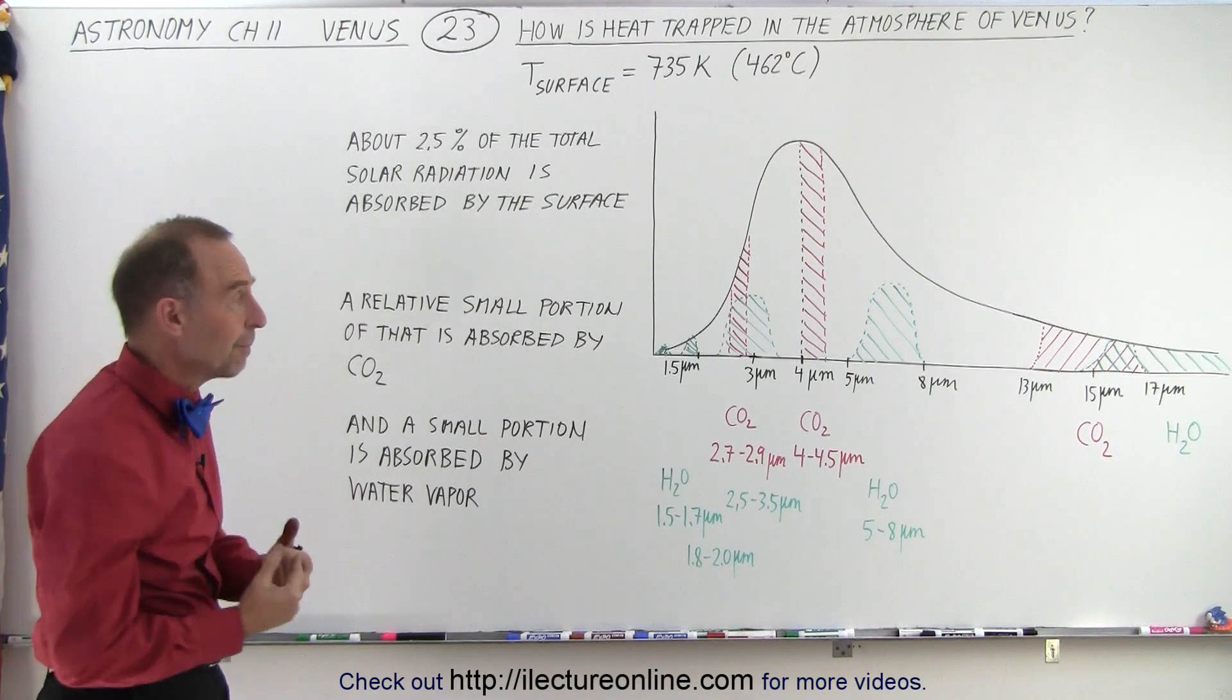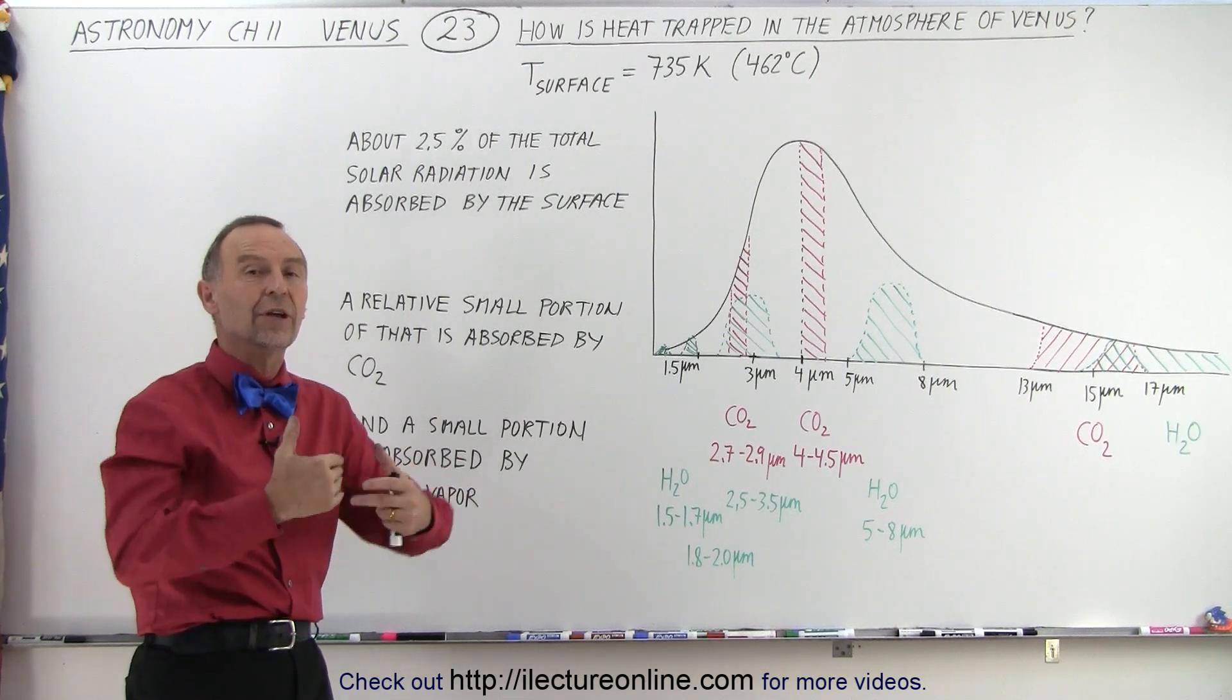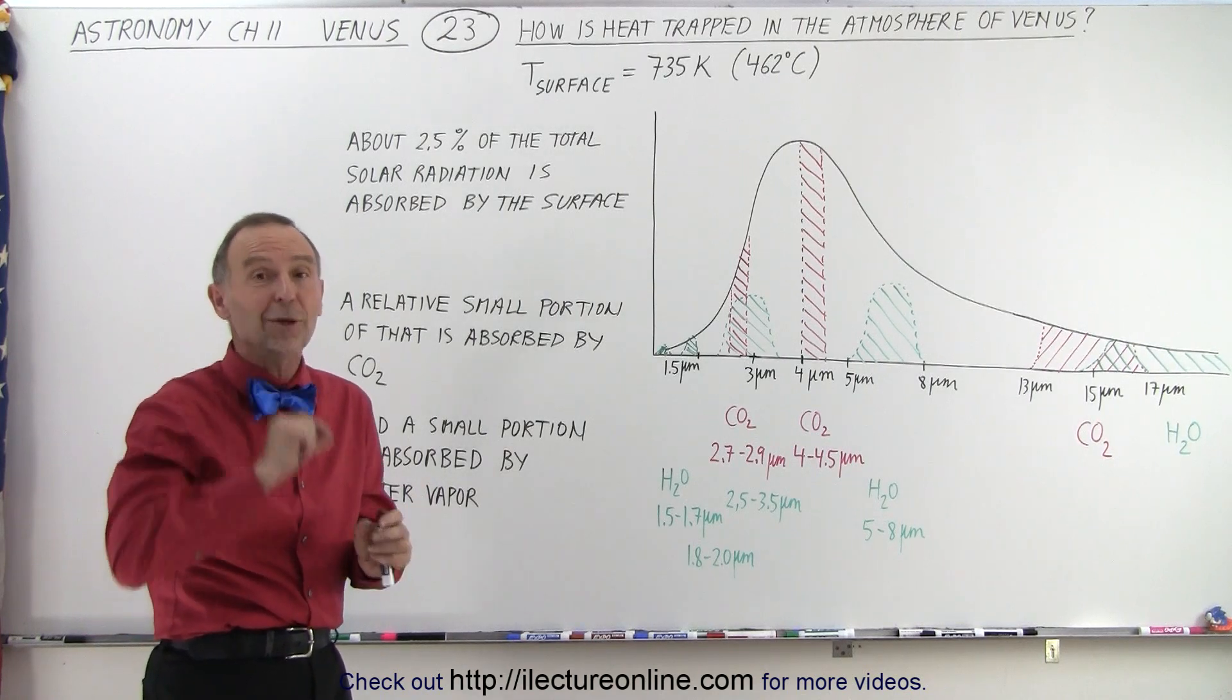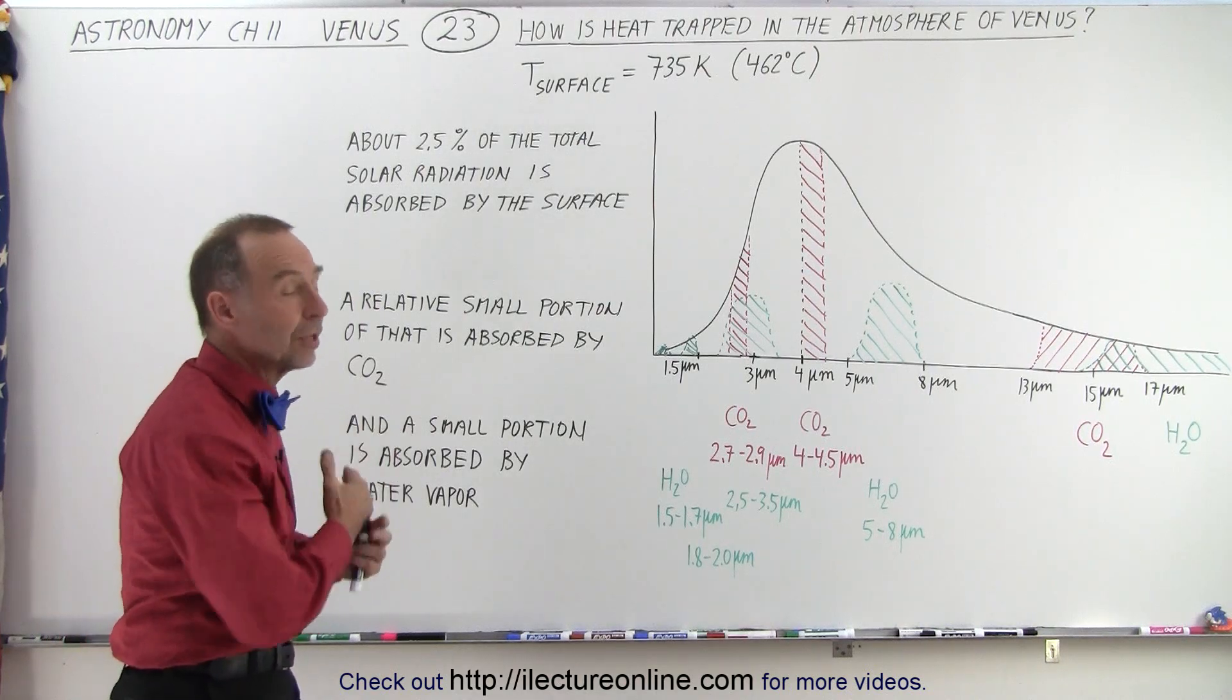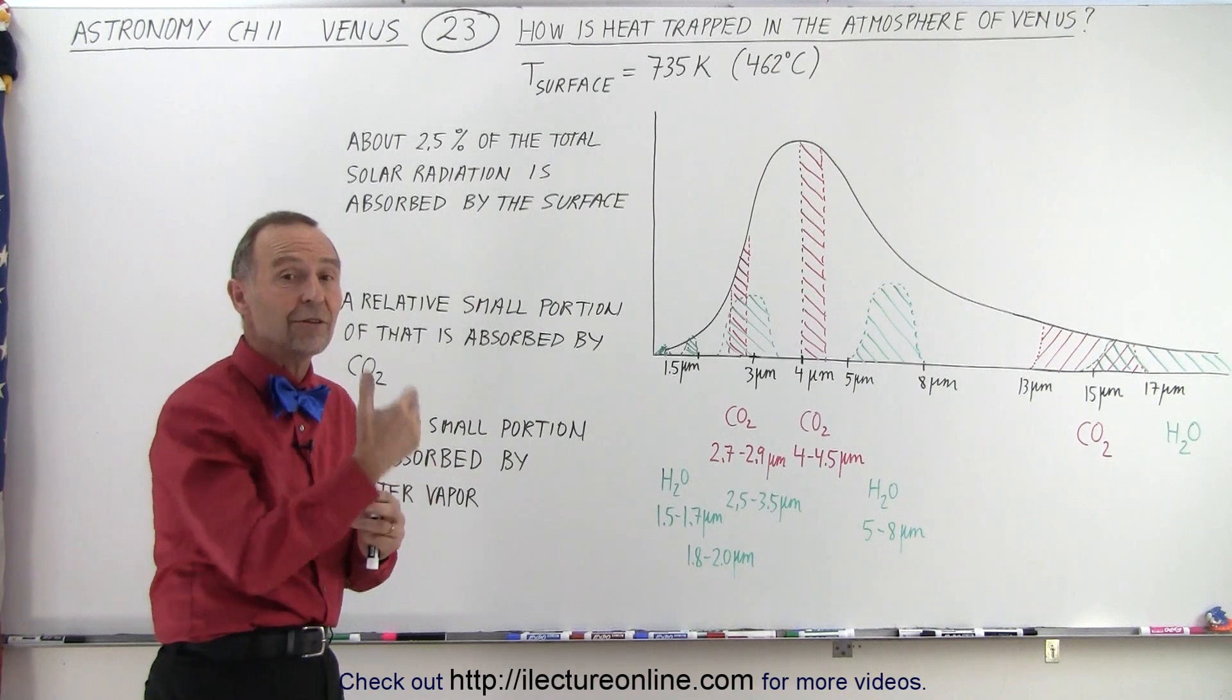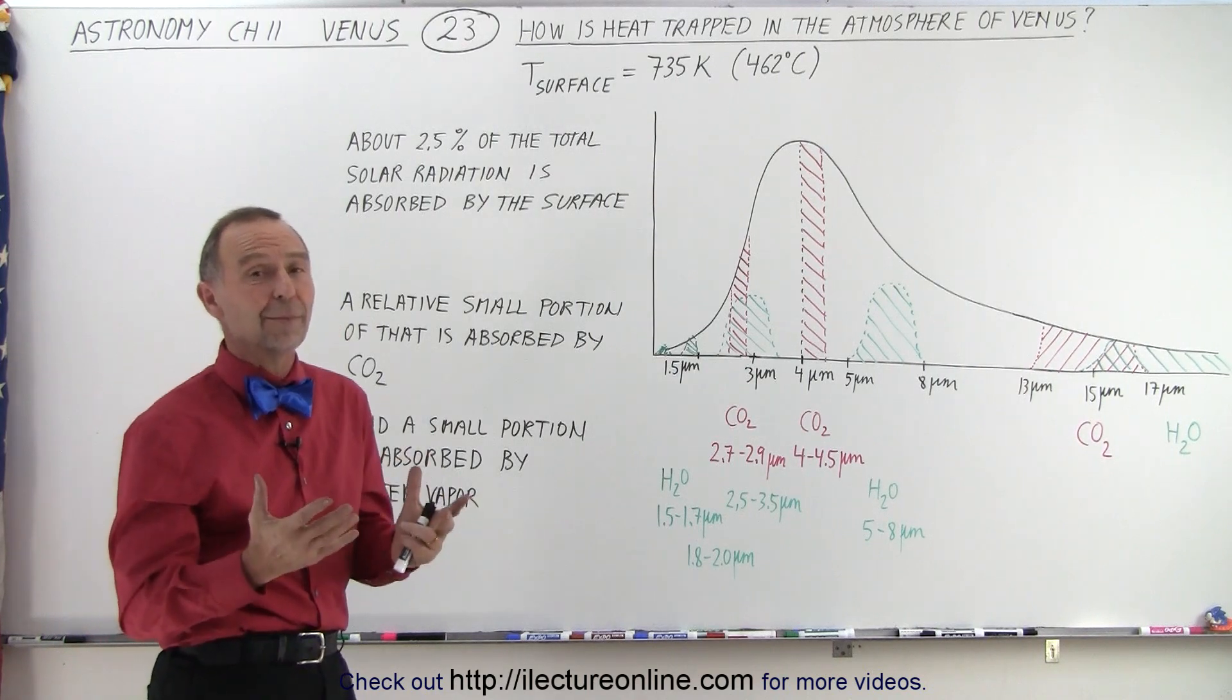Now, if we take a look at the absorption bands of carbon dioxide and water vapor, which are the two most important constituents in the atmosphere that absorb the energy from the surface, there's a small amount of water vapor that actually plays a significant role, but not nearly as big in this case as carbon dioxide. By far, carbon dioxide is the most important greenhouse gas on Venus, because after all, 96.5% or so of the atmosphere is made out of carbon dioxide,